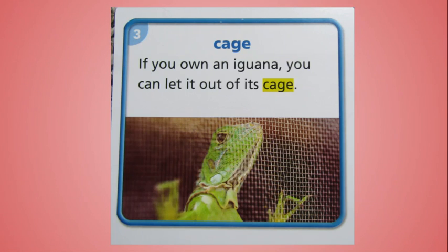Our next word is cage. If you own an iguana, you can let it out of its cage. Look at your picture clue. You can see that the iguana is in a cage. So a cage is a structure made of wire or heavy metals. Usually animals are kept in them. Can you think of any other animals that are kept in cages? I was thinking of a dog sometimes kept in a kennel. A hamster is kept in a cage. A guinea pig is. Maybe your rabbit has a cage. Why might you take a gentle animal or a bigger animal that doesn't normally live in a cage and put it in a cage? Maybe it needs to go to the vet.